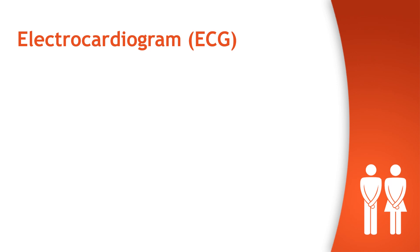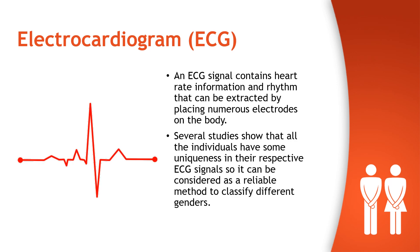An electrocardiogram signal, also referred to as an ECG signal, is a signal that contains heart information and rhythm that can be extracted by placing a number of electrodes on the body. Several studies have shown that every individual has some uniqueness in their ECG signals, so they can be used to differentiate between different genders.